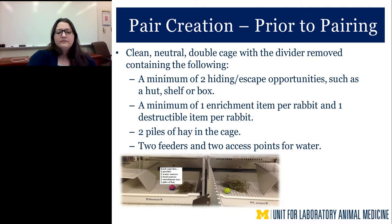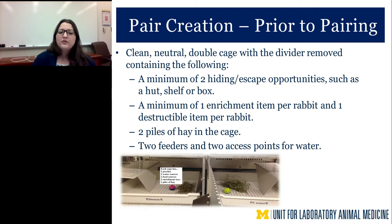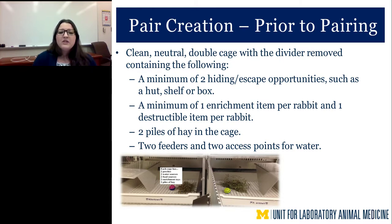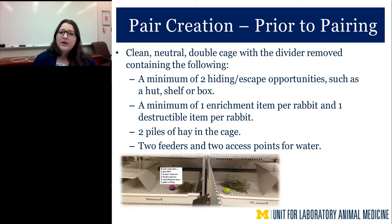To start creating your pairs, first set up your cage: a clean, neutral double-wide cage with the divider removed, containing at least two of everything to decrease resource competition and guarding. Provide a minimum of two hiding or escape opportunities — a hut, shelf, or box. Provide a minimum of one enrichment item per rabbit, one destructible item per rabbit, two separate piles of hay, two separate feeders, and dual access points for water. Always maintain two of everything throughout the pairing and monitoring process.